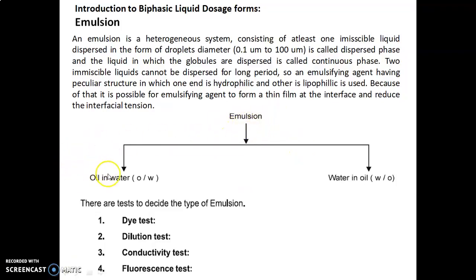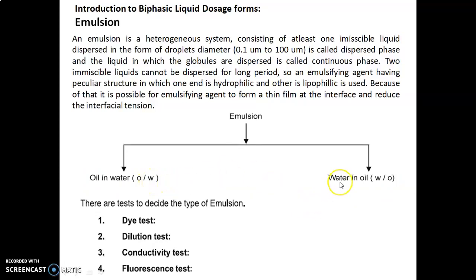The simple classification of emulsions is: Oil in Water (O/W type) and Water in Oil (W/O type). In the O/W type, oil is the internal phase while water acts as the external phase. In the W/O type, water is the internal phase while oil is the external phase. There are tests to decide the type of emulsion.